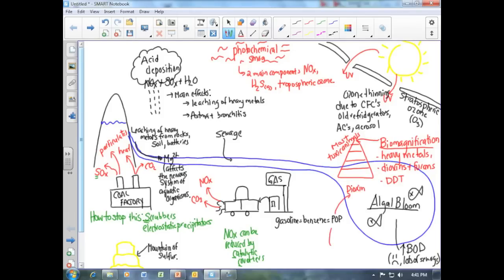Dioxins and furans can enter into our water system when they are used in the bleaching of pulp and paper.